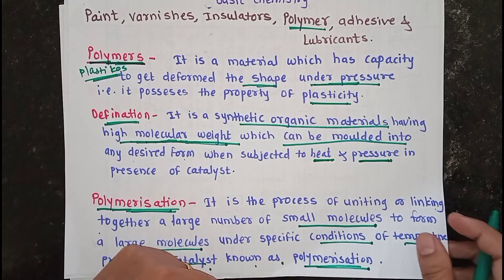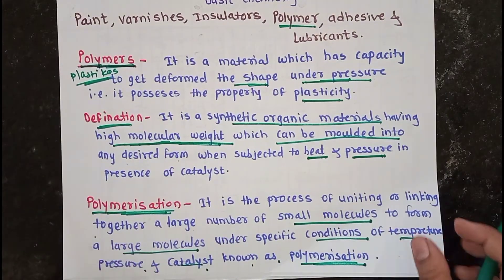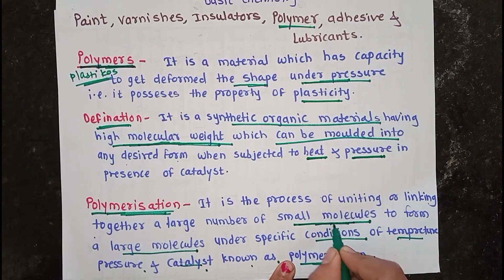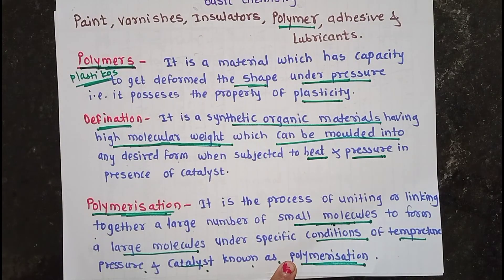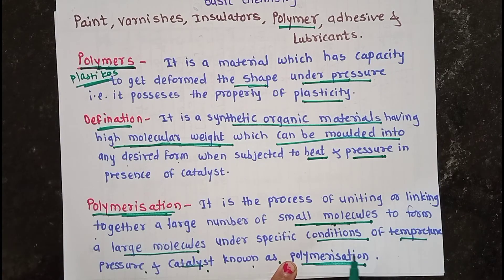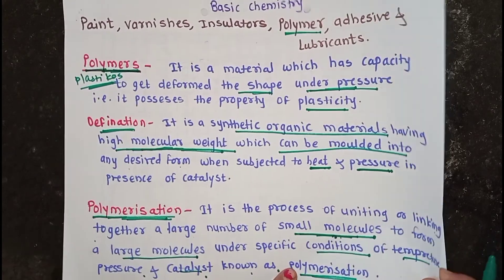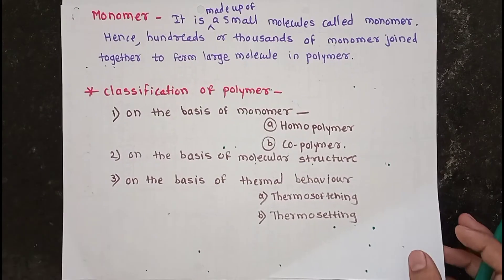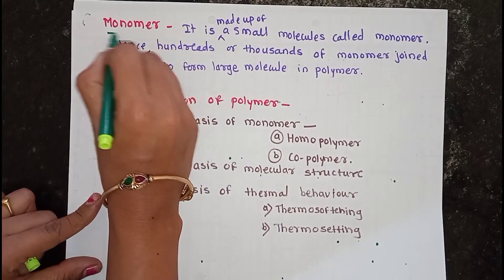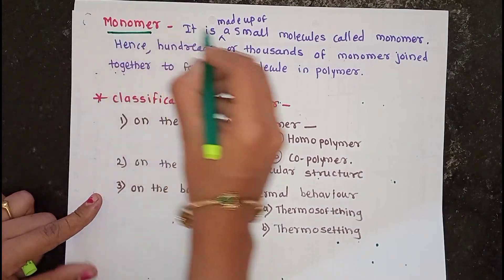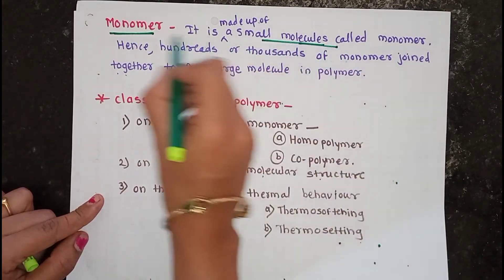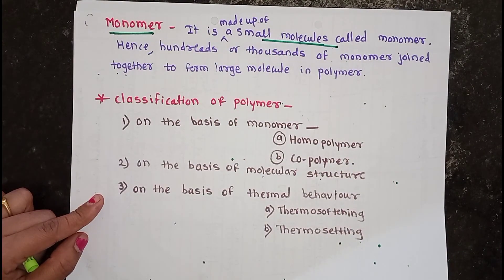Polymers are made up of small molecules. These small molecules are repeated regularly in the structure of the polymer. These small molecules are called monomers. A monomer is simply a small molecule.